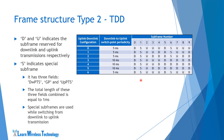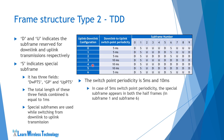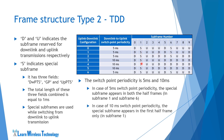Special subframes are used while switching from downlink to uplink transmission — a special subframe appears only when there is a transition from downlink to uplink. The downlink-to-uplink switchpoint periodicity is either 5 milliseconds or 10 milliseconds. The switchpoint periodicity is 10 milliseconds in configurations where there is only one special subframe, as seen in configurations 3, 4, and 5. When the switchpoint periodicity is 5 milliseconds, the special subframe appears in both half frames, i.e. subframe 1 and subframe 6. The guard period between DWPTS and UPPTS is reserved for downlink to uplink transition.